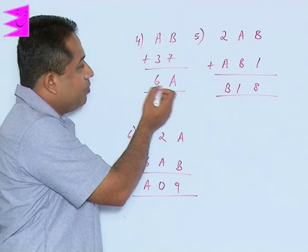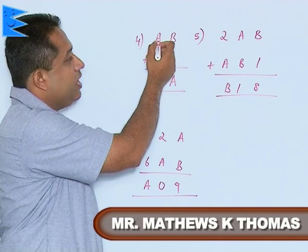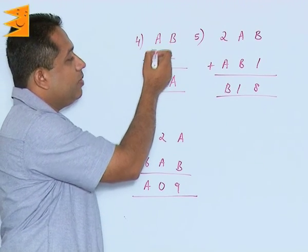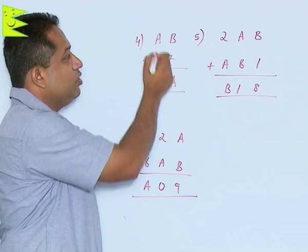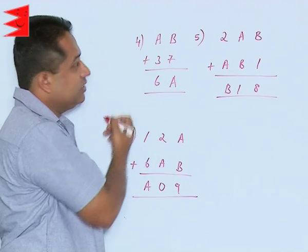Now if you notice here, this is a number in the 60s. If it is a number in the 60s, the value of A cannot be let's say 4, because if I am taking 4, this will become 4 plus 3 is 7. So that will become a number in the 70s. So by this question it is clear that the value of A has to be less than 4.